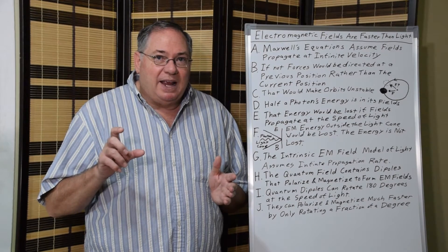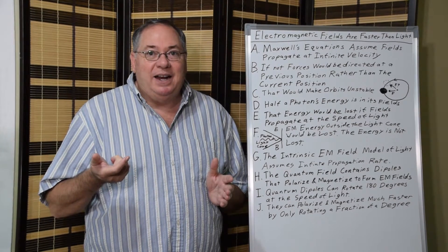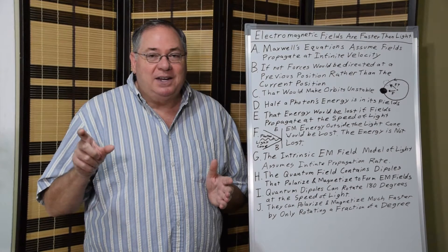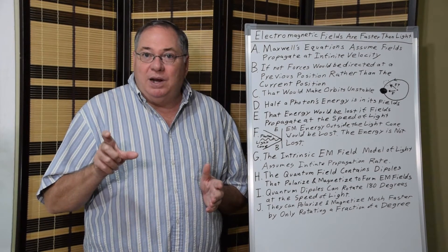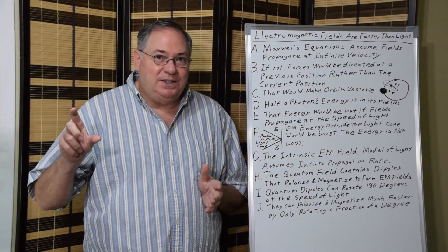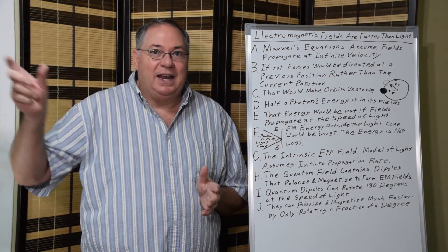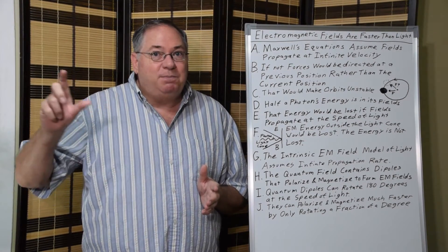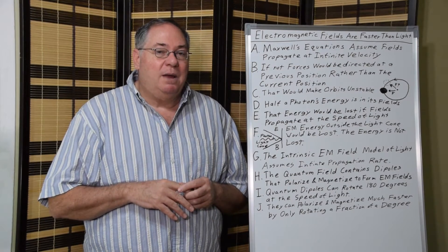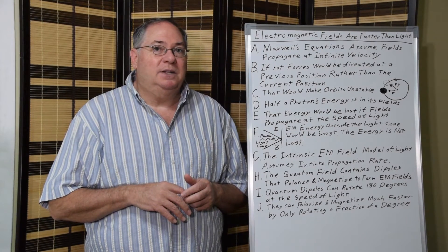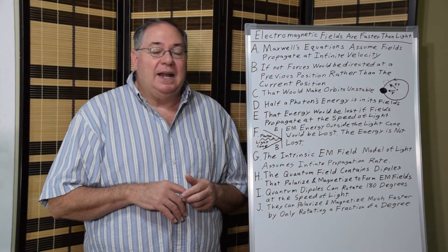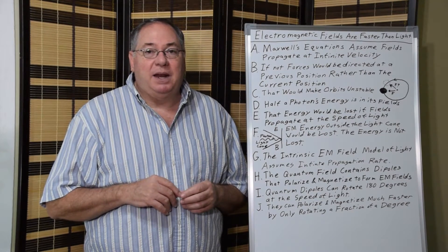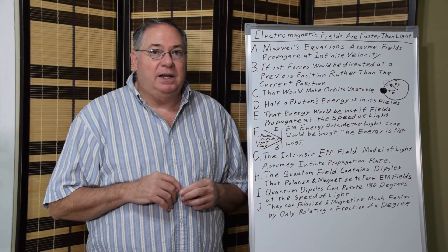So because it doesn't have to rotate 180 degrees, they only have to rotate a fraction of a degree. And when one fluctuation rotates, it causes its neighbors to rotate, which causes its neighbors to rotate. So this propagation can occur much, much faster than the speed of light. And that's how electric fields and magnetic fields propagate much, much faster than the speed of light.